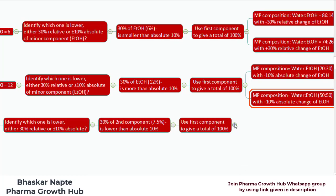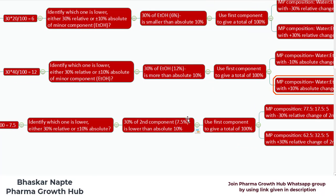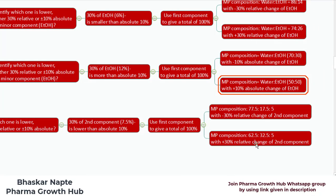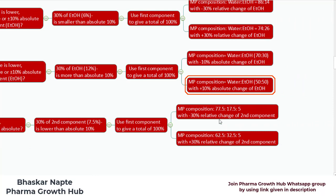Use the first component to give a total of 100%. The mobile phase with minus 30% relative change in the second component is 77.5 : 17.5 : 5. Why 17.5? My original quantity of the second component is 25; 25 minus 7.5 becomes 17.5. As I decrease the quantity of the second component by 7.5%, I need to increase the quantity of the first component by 7.5%. The original quantity of the first component is 70, so 70 plus 7.5 becomes 77.5. I have not changed the quantity of the third component.